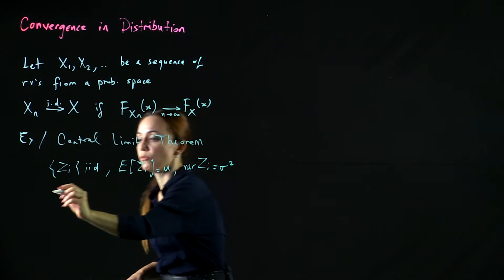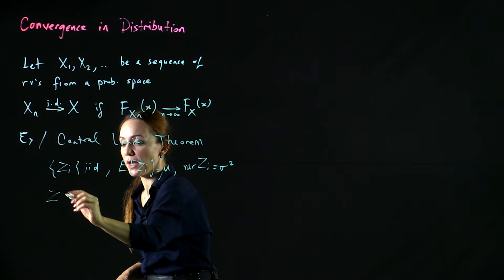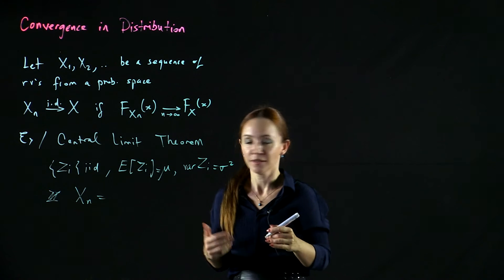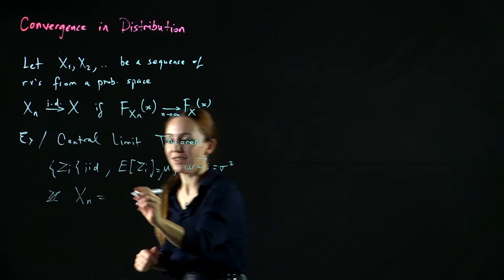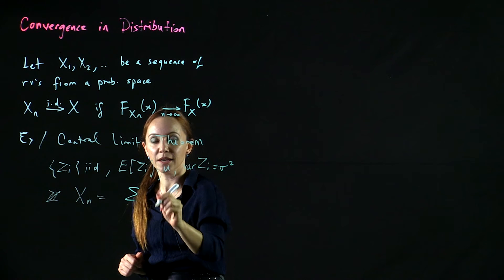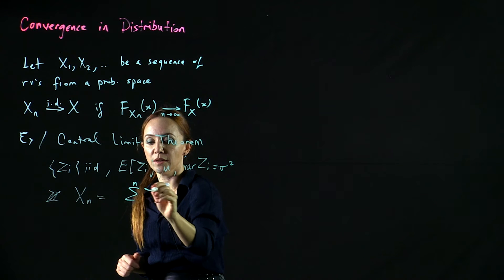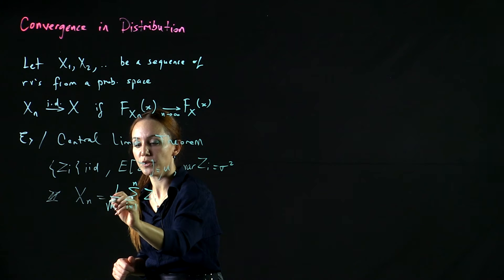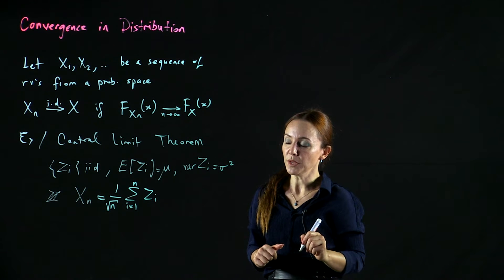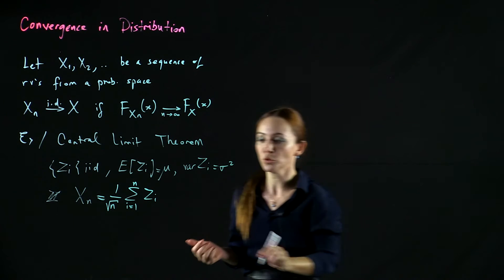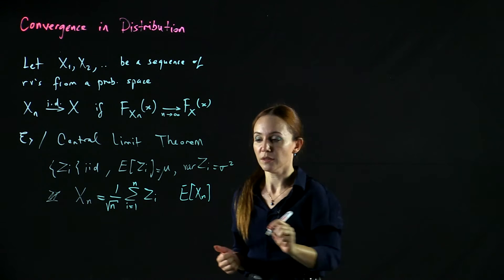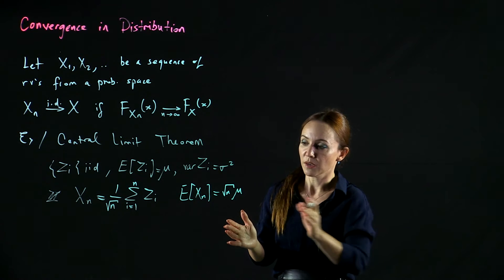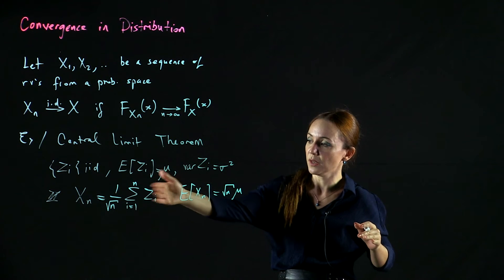We form xn as a normalized sample sum by taking the first n of the zi's, adding them, and normalizing the sum by the square root of n. What we have produced is a random variable whose mean increases like square root of n times mu, so its mean keeps shifting from mu up to infinity as we increase n.